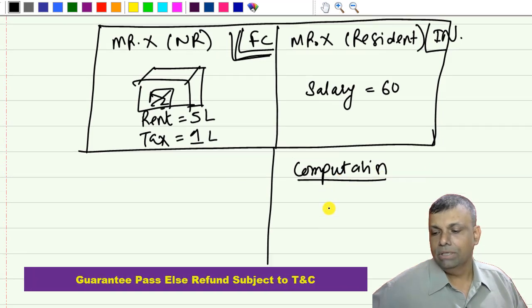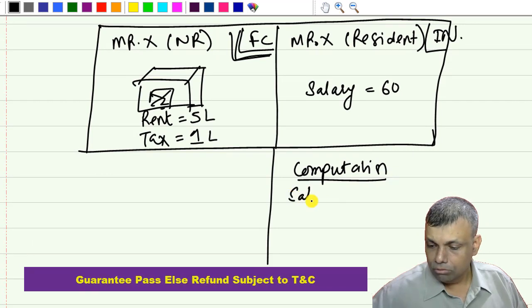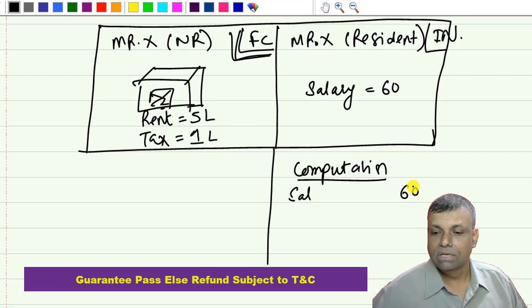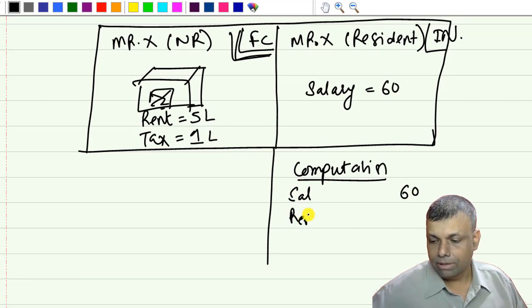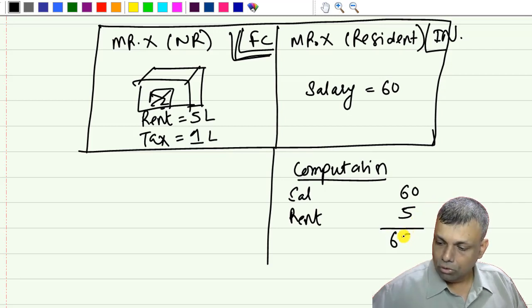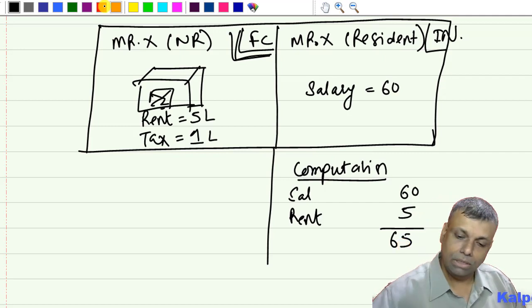When you do the computation in India, you will naturally include the salary income of 60 lakhs, and because of global taxation, your rental income from the foreign property will also be included in India for the purpose of taxation. So your total income will be computed including both Indian and foreign incomes because you are resident in India and liable for global taxation.